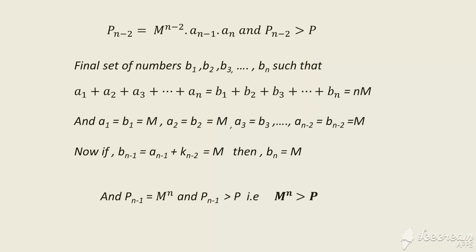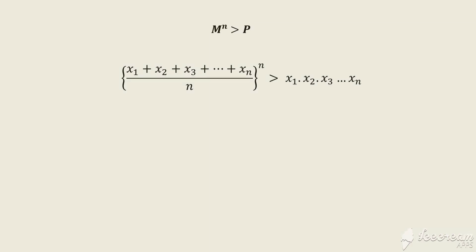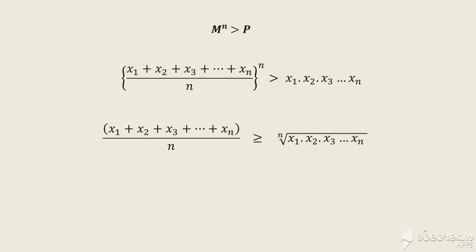Looking at this relation: ((x₁ + x₂ + … + xₙ) / n)ⁿ ≥ x₁ · x₂ · … · xₙ. Taking the nth root on both sides, we get our result: AM ≥ GM. The equality case is easily proved by noting that if all numbers are equal, then AM equals GM.